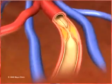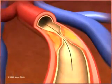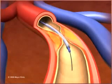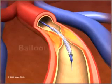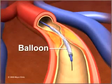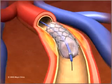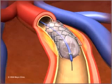A thin, flexible metal wire is then advanced through this tube and past the site of blockage in the artery. A second, smaller catheter is then inserted over the wire and threaded to the same artery. When it reaches the narrowed area, a small balloon on its tip is inflated to reopen the artery and flatten the blockage into the artery wall, while at the same time stretching the artery open to increase blood flow to the heart.